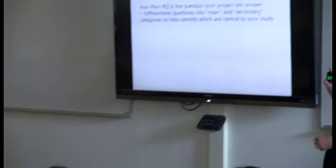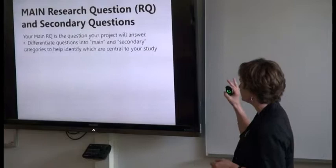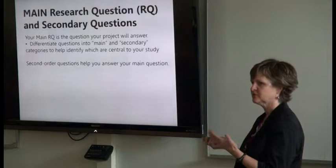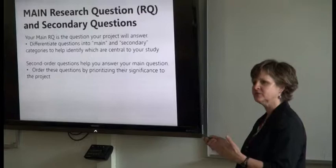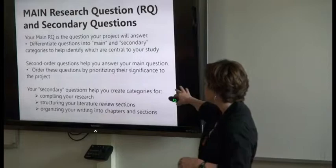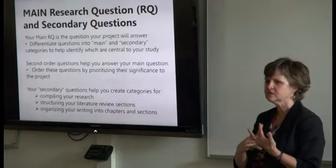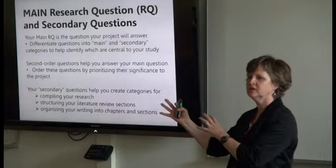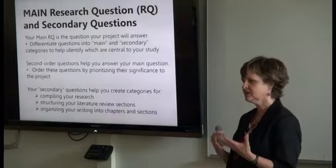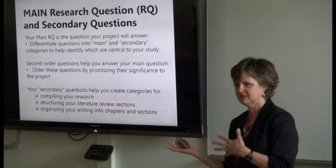Depending on the project, you may differentiate questions into main and secondary categories. These second-order questions might help you answer the research question, or they might be preliminary questions that need to be answered through reading. You can order the questions by priority and significance. The secondary questions, as well as components of the main one, help you figure out what to look up, what to include in the literature review sections, and how to organize the writing into chapters.